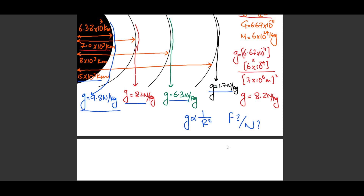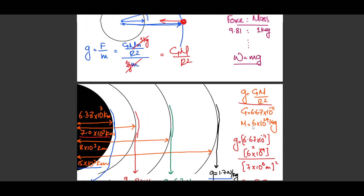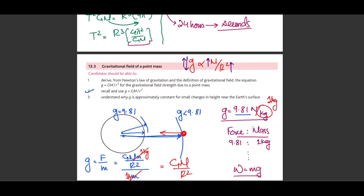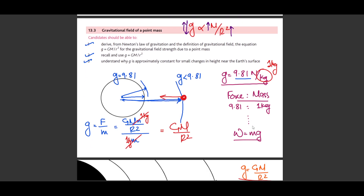So gravitational field strength tells you how much force is exerted per unit mass — measured in N/kg. As a comparison, electric field strength tells you how much force per unit charge — measured in N/C. For gravity, g = GM/r² in N/kg. We also understand that g ≈ 9.81 at Earth's surface and can be used in calculations of gravitational potential energy as GPE = mgh when staying very close to the surface.